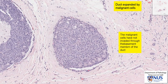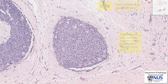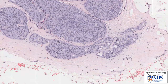Here is what DCIS, or ductile carcinoma in situ, looks like. There are several patterns for DCIS. We can have solid DCIS, as you see here. And in this other area of DCIS, you can see more prominent luminal structures — this is called cribriform DCIS.